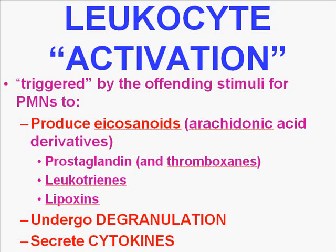After the leukocytes have been triggered to go to the site of injury, there is now leukocyte activation, which is a complex phenomenon involving several things. One is that the leukocytes produce a wide variety of eicosanoids — arachidonic acid derivatives — of which prostaglandins and prostaglandin-like compounds like thromboxanes are crucial. The leukotrienes are also a separate type of eicosanoid. The lipoxins are a third type, and the lipoxins generally counteract the leukotrienes.